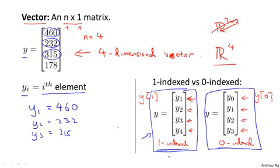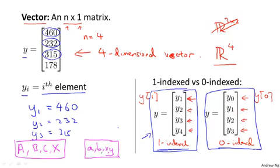Finally, by convention, usually when writing matrices and vectors, most people use uppercase to refer to matrices. So we use capital letters like A, B, C, X to refer to matrices. And usually we use lowercase like a, b, x, y to refer to either numbers, just real numbers or scalars, or to vectors.